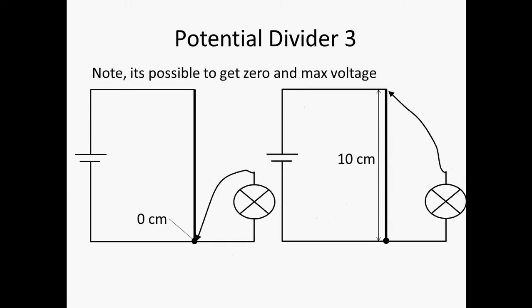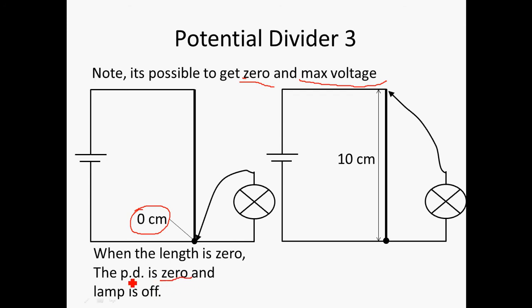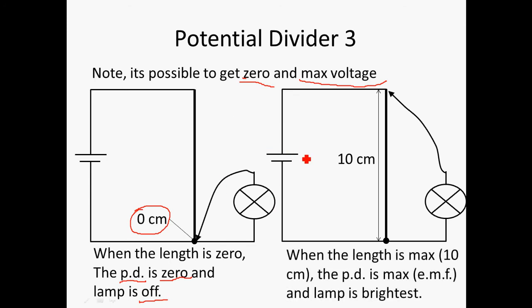Some other interesting things you need to know is that this device has the ability to get both 0 to the maximum voltage possible. How do you get 0? You get 0 when you put the jockey all the way to the starting point. If you put it at this point, the length is 0. When the length is 0, you can effectively say that the potential difference is also 0, and when it's 0, the lamp is turned off. What happens if you put it to the maximum? When you put it to the maximum, if this is the EMF, the whole EMF will be applied here throughout. That means that at the maximum length, the PD is maximum and equal to the EMF. The lamp is the brightest because there's no other resistors here. There's one single resistor here, and the whole voltage is across it, so the lamp also gets the full voltage of the EMF.